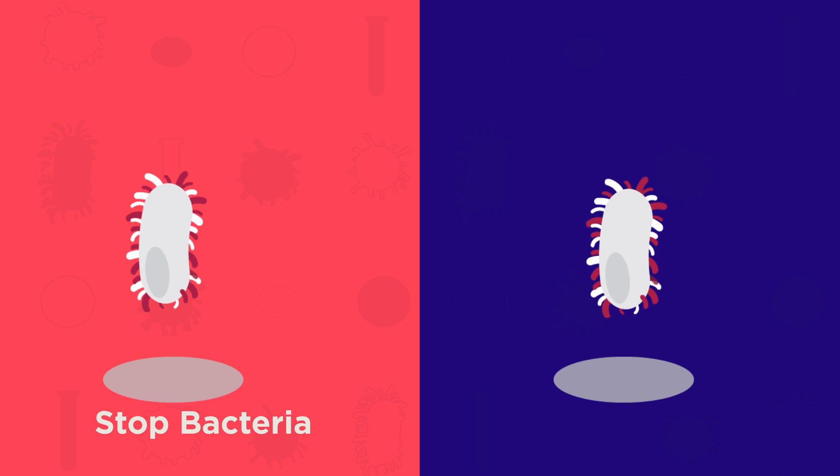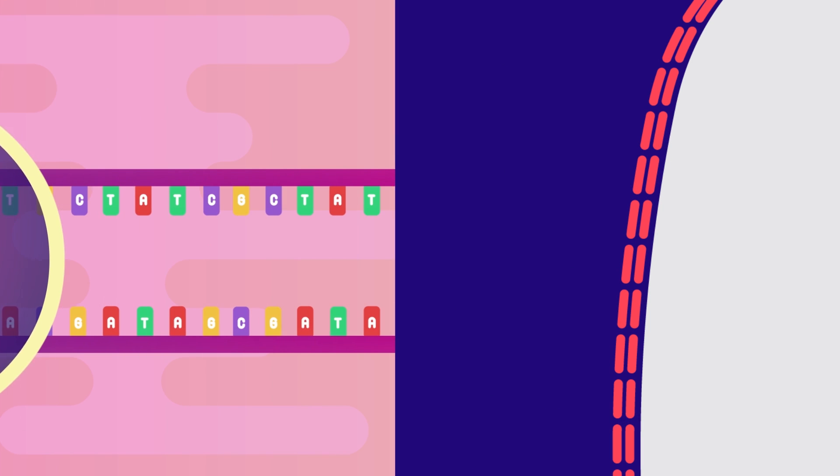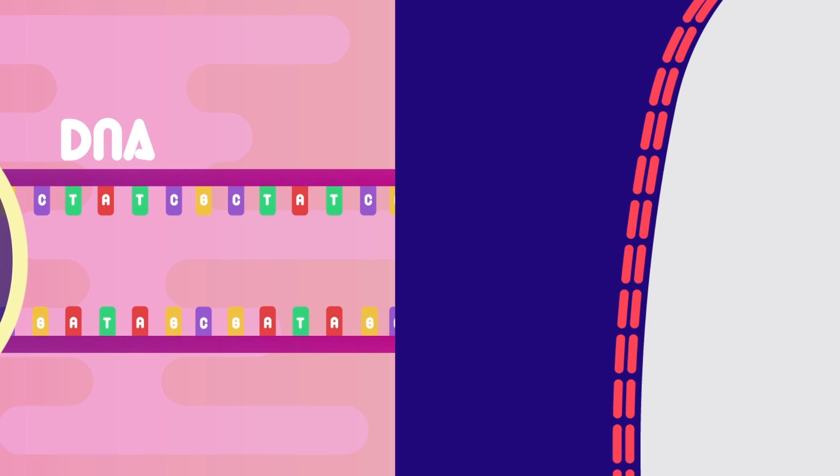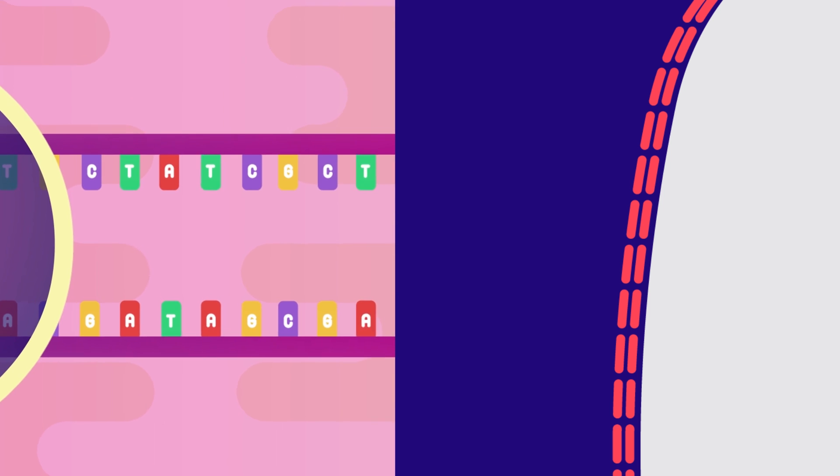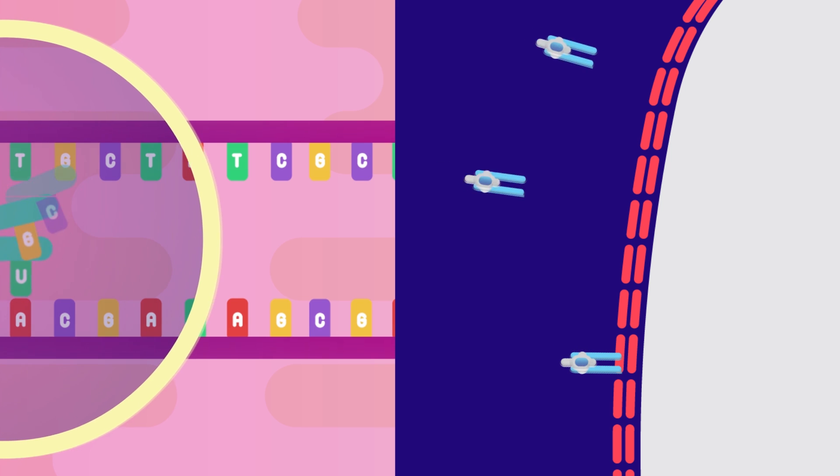This is done in two ways: either by stopping the bacteria from reproducing or by killing the bacteria. Antibiotics do this by inhibiting certain metabolic or chemical processes which occur inside the bacteria. For example, they can stop protein synthesis, DNA replication, or break down their cell wall.